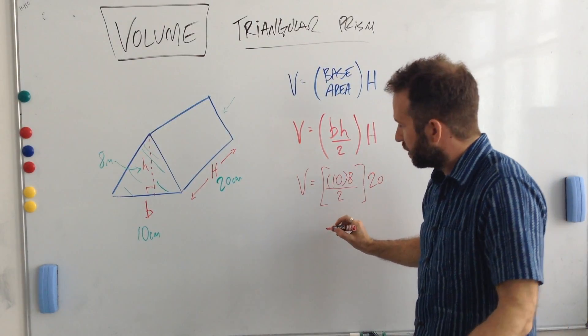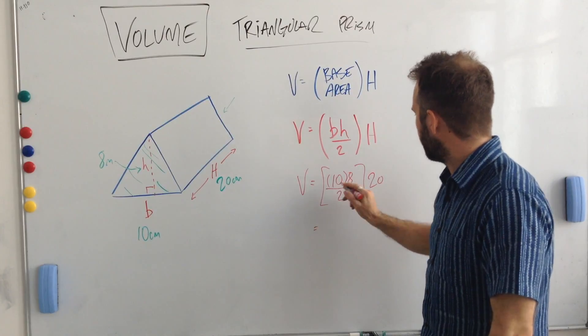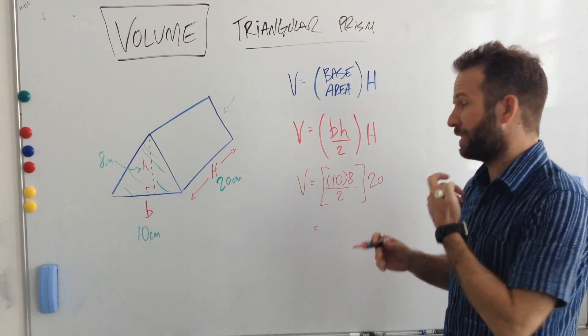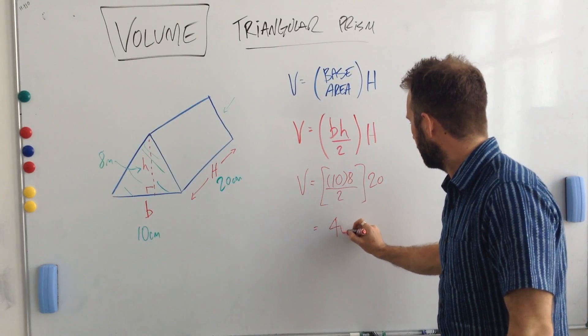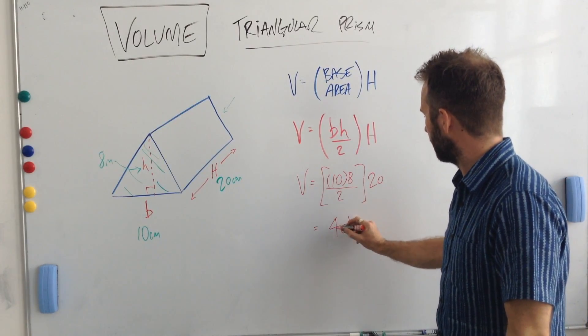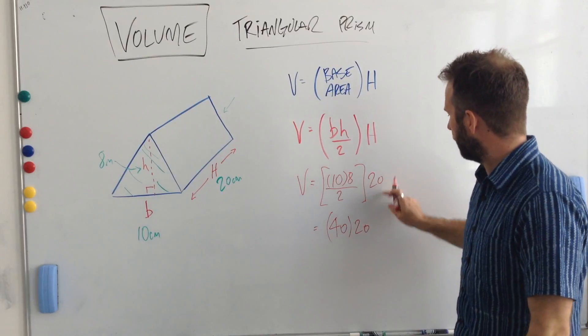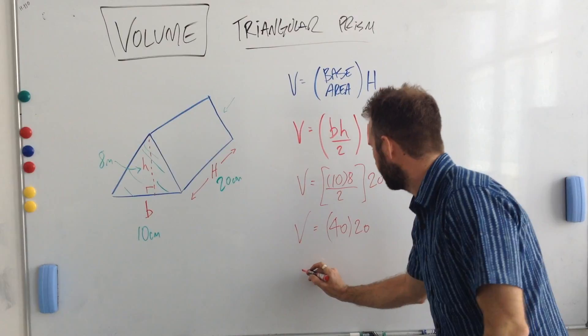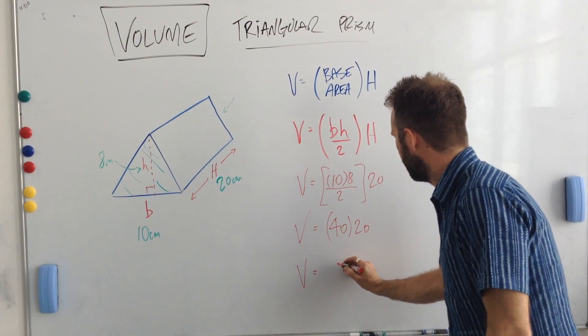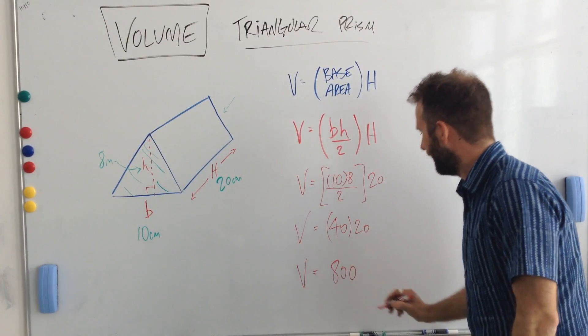We just need to work through it. I've got 10 multiplied by 8, which is 80. I've got 80 divided by 2, which gives me 40 in the end there. And now I still have that 20. So what I've got is that the volume is equal to 40 multiplied by 20. So in the end, the volume becomes 800.